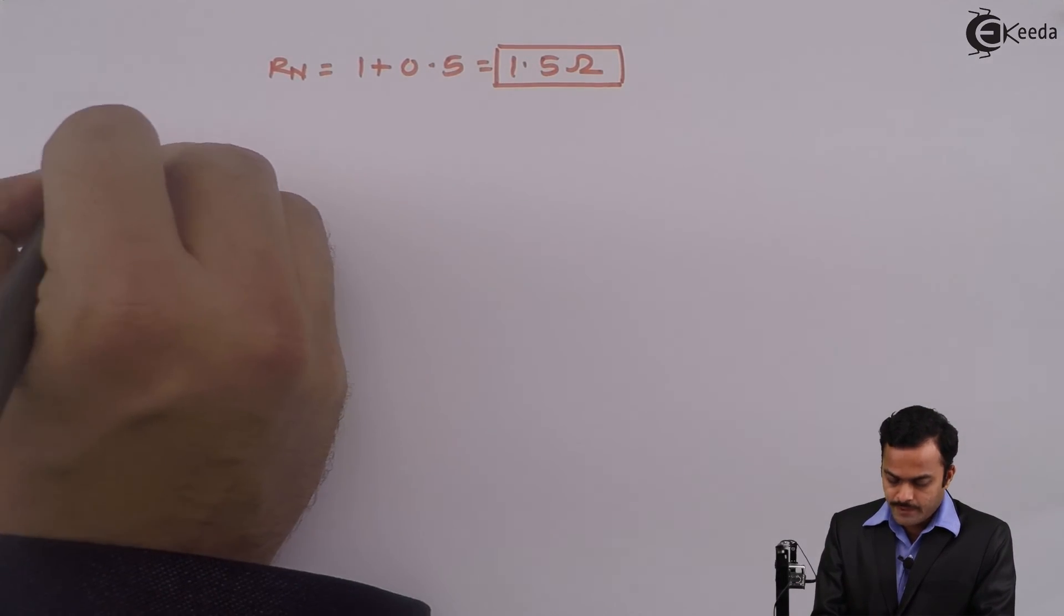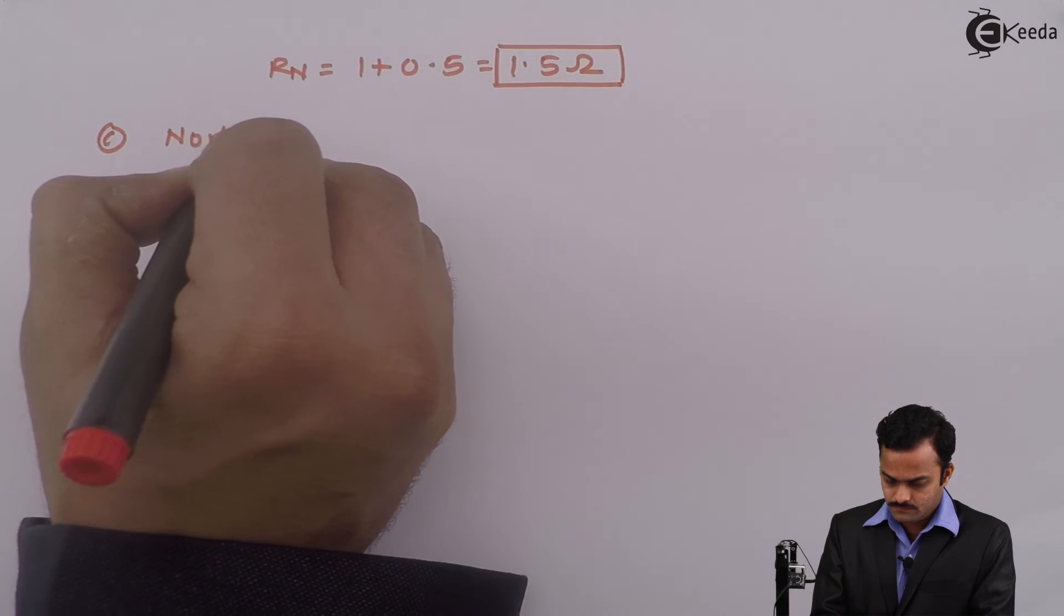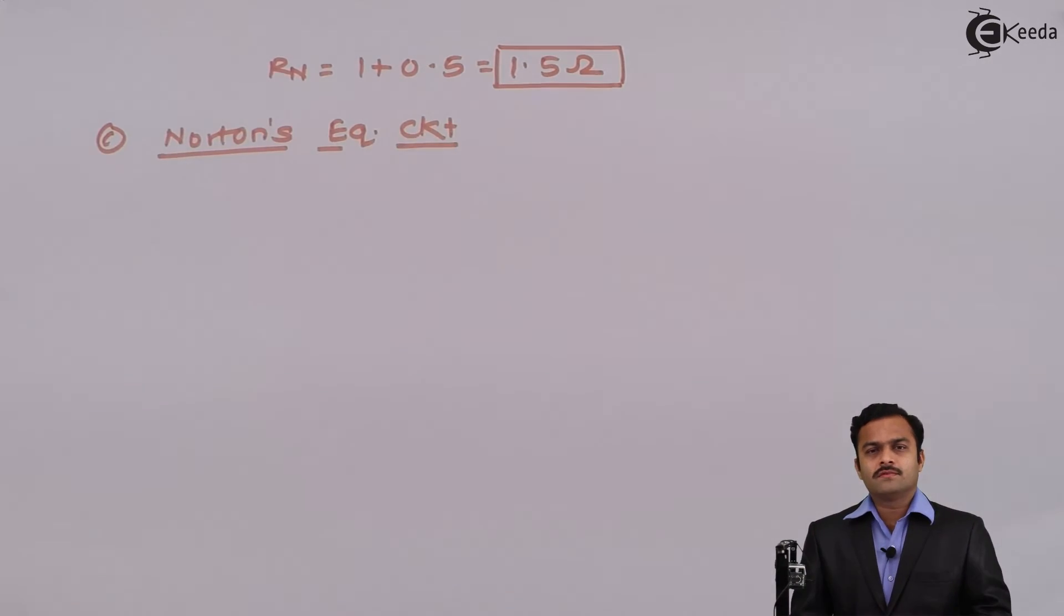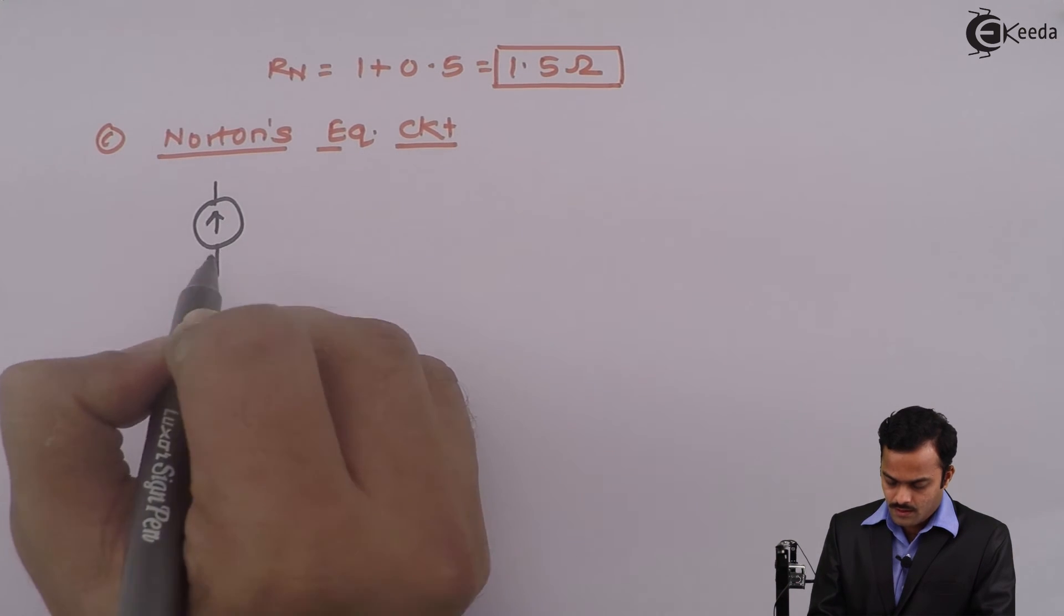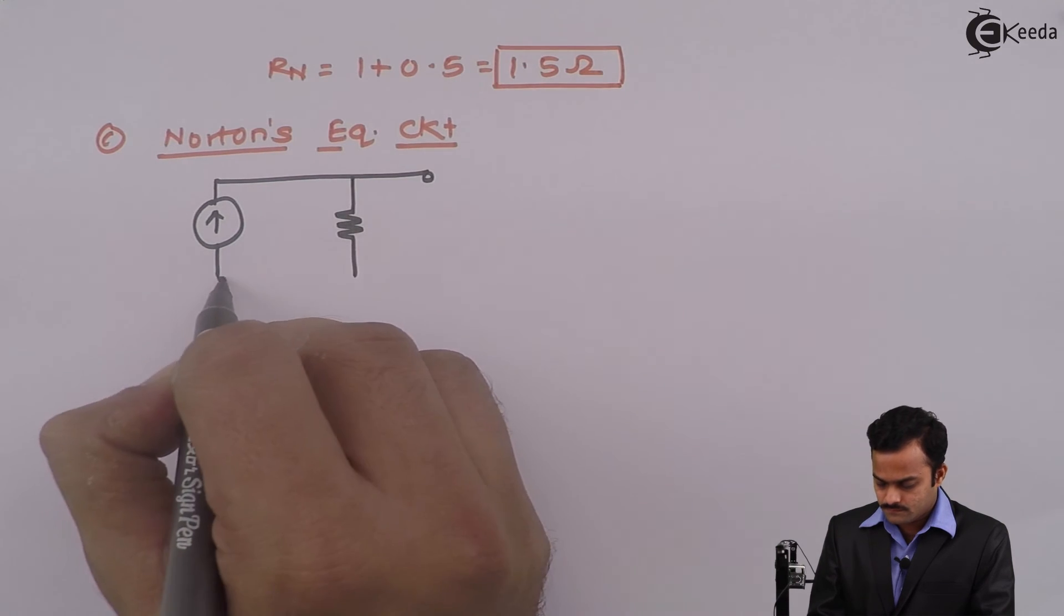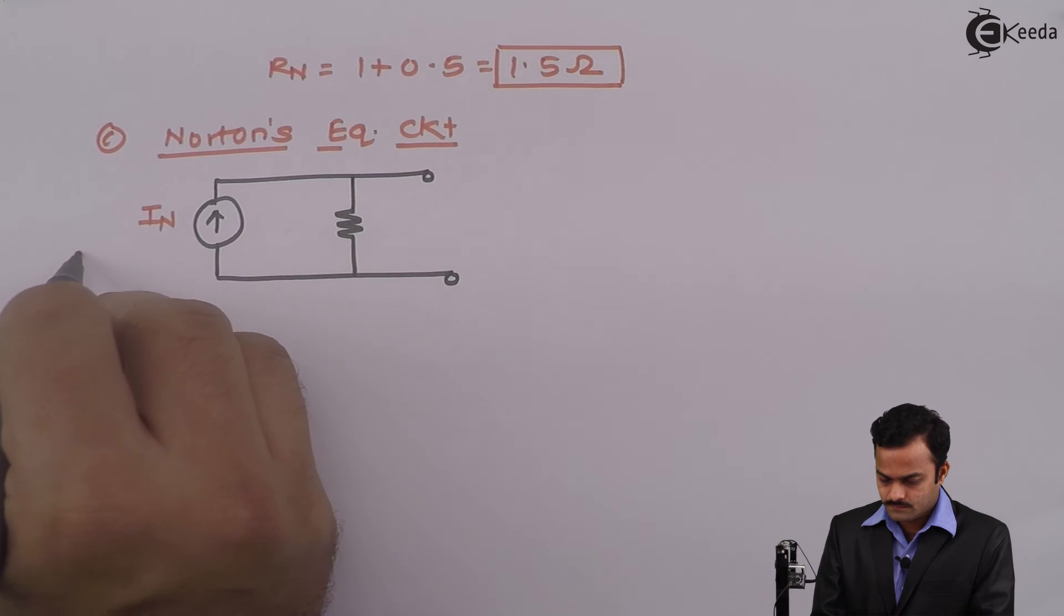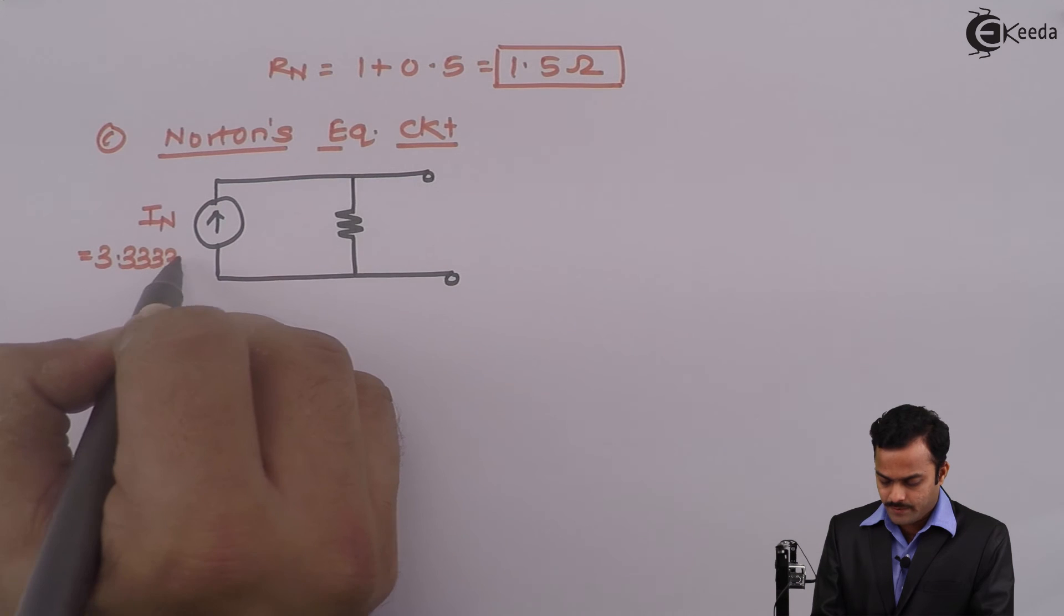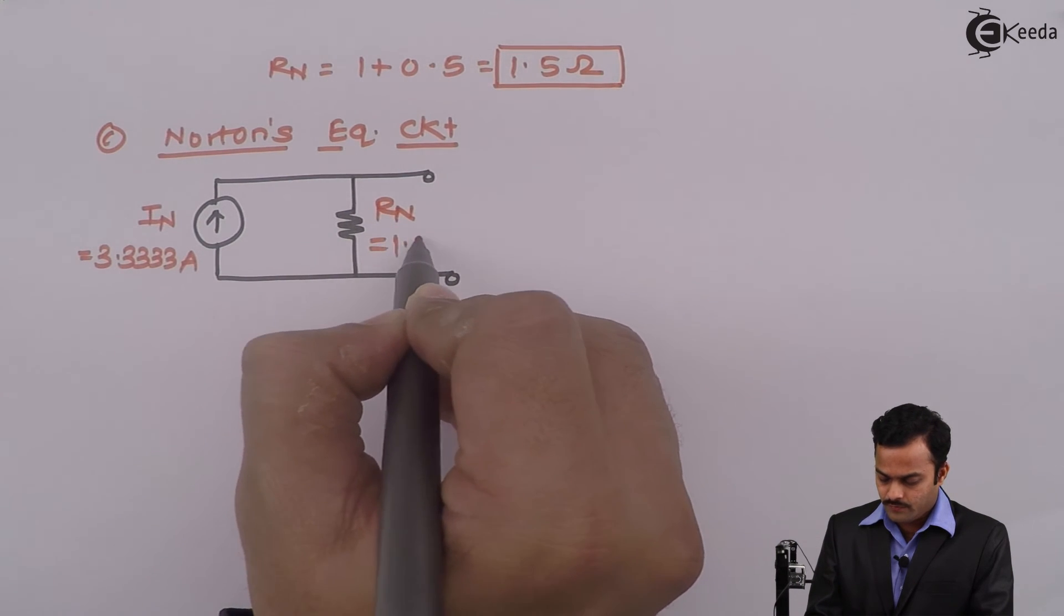Third step, we need to draw Norton's equivalent circuit, which consists of a current source and a resistance across it. So current source will have the value 3.3333 ampere and Norton's resistance will be of 1.5 ohm.